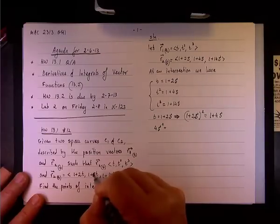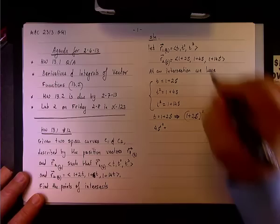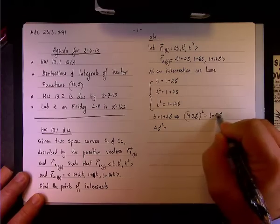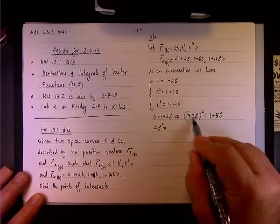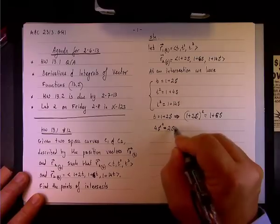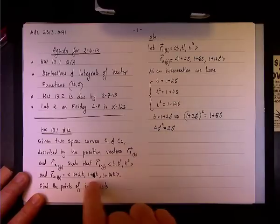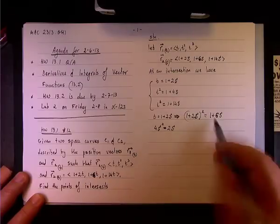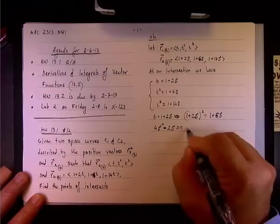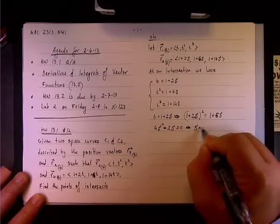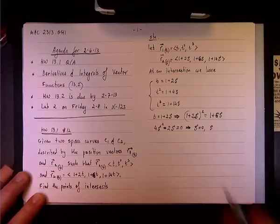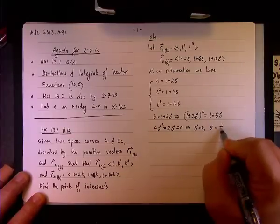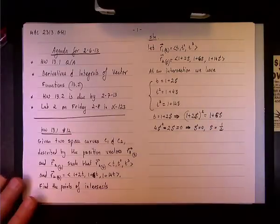A student correction is noted: R2 uses 1+6s in one component, not 1+4s. After the correction, we have 4s² + 4s - 6s - 2s = 0, giving 4s(s - 1/2) = 0 with 1 - 1 = 0. The solutions are s = 0 and s = 1/2.